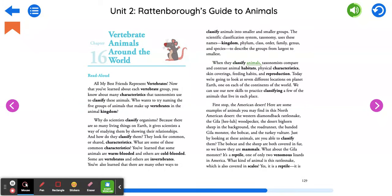When they classify animals, taxonomists compare and contrast animal habitats, physical characteristics, skin coverings, feeding habits, and reproduction. Today, we're going to look at seven different locations on planet Earth, one on each of the continents of the world. We can use our new skills to practice classifying a few of the animals that live in each place. First stop, the American Desert.